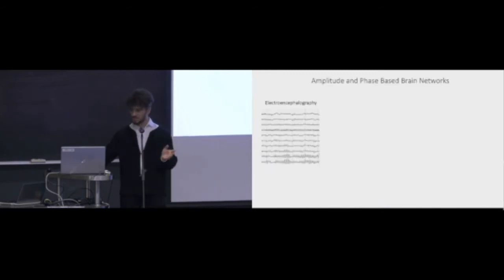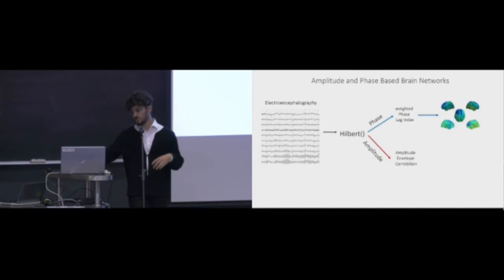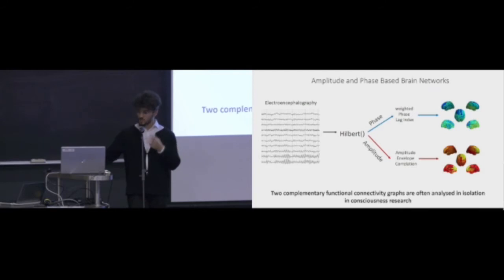In consciousness research, usually when we want to create a functional connective brain network, what we do is we take our data, do a Hilbert transform and get the phase out so we can calculate something like WPLI as an index, for instance, and then we can get a functional connective network. Or what we can do is take the amplitude and calculate something like AEC and we get another kind of network. But here, what we have is two different kinds of networks which are actually coming from exactly the same signal which are often only analyzed in isolation.